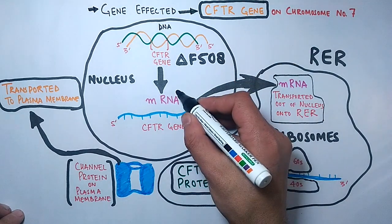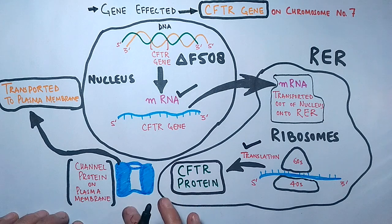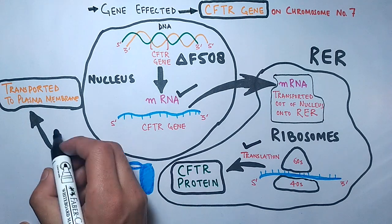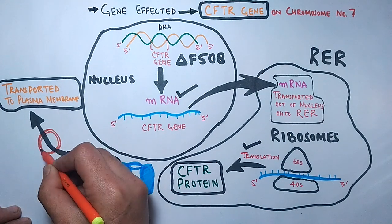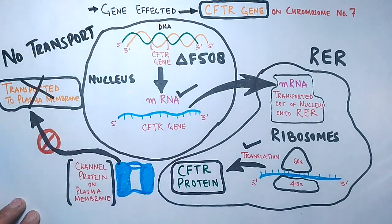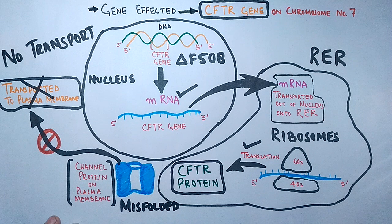When there is a ΔF508 mutation, the gene is still transcribed into mRNA and the CFTR protein is still produced through translation — everything proceeds normally up to that point. However, the CFTR protein is not able to be transported to its final destination at the plasma membrane due to folding errors. This means there is no chloride channel in the epithelial cells, so chloride ions are not transported and water is not drawn out of the cell.